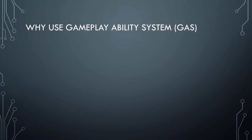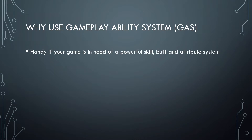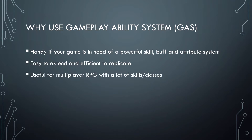So why would we want to use the Gameplay Ability System instead of the blueprint system? This is a very robust and powerful skill and attribute system. It's easier to manage, you can easily extend it to create more abilities, and it's very efficient to replicate for multiplayer. It was originally developed for Paragon, and Fortnite also uses it. It's especially useful for creating multiplayer RPGs with lots of skills and classes, and popular MOBAs also use the Gameplay Ability System.